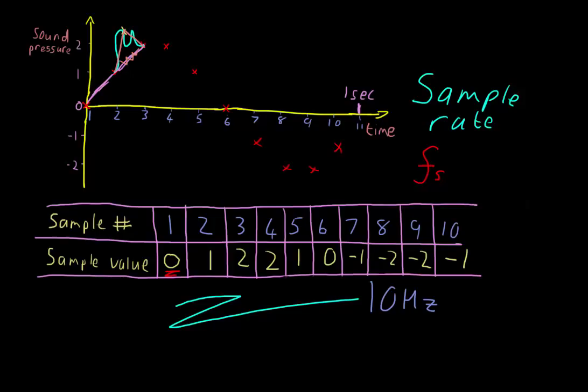And if we sampled at an even higher rate, we'd get even more accuracy. So we can see here that sampling at a higher frequency gives us higher accuracy on the signal.